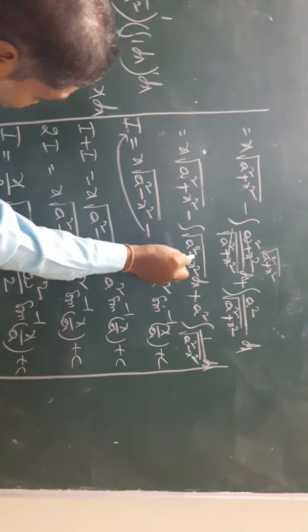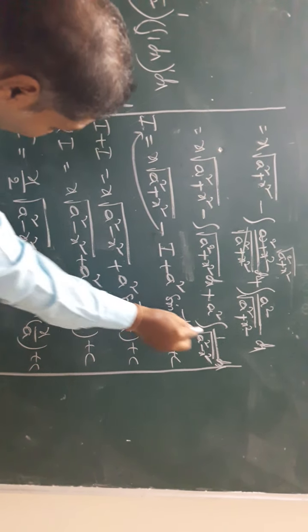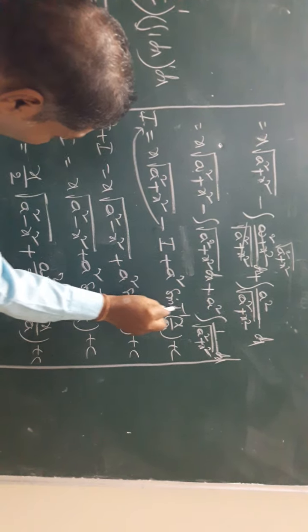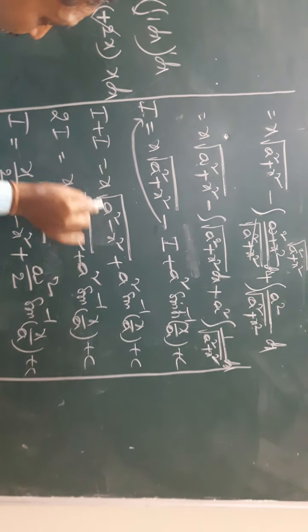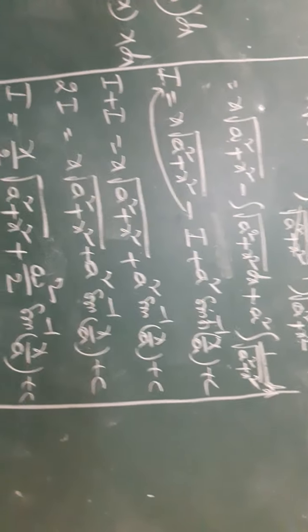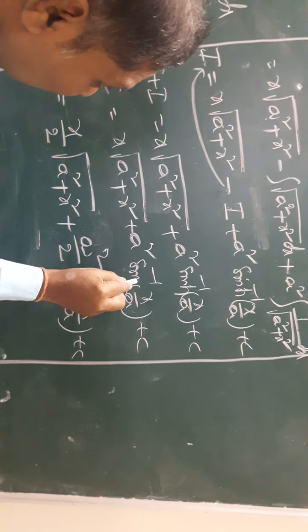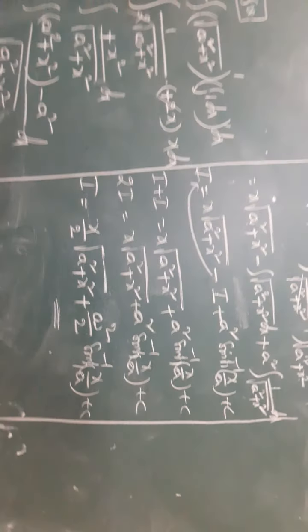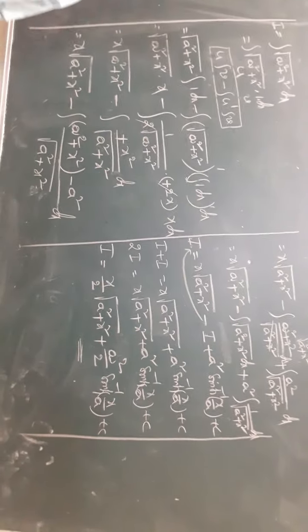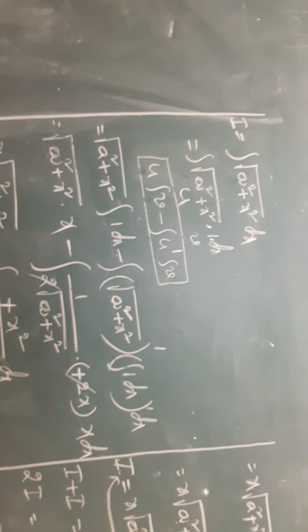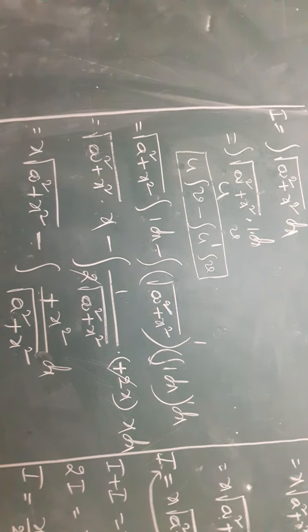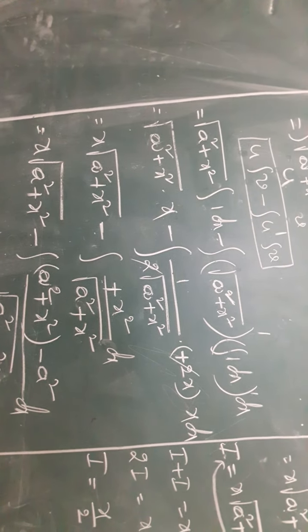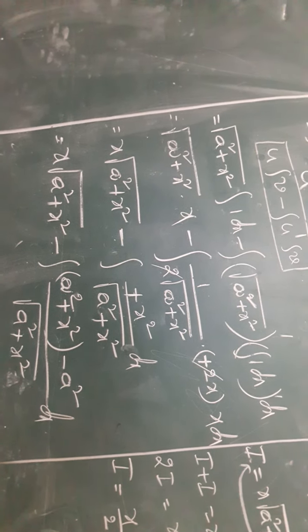This part also becomes another I on one side. This completes the proof. Write down the result for ∫√(a² + x²) dx.